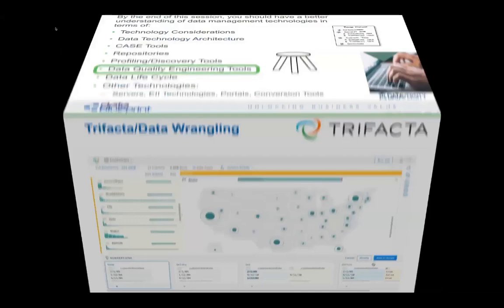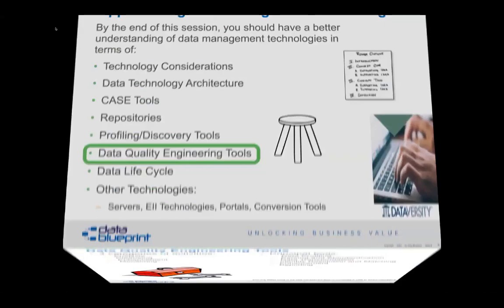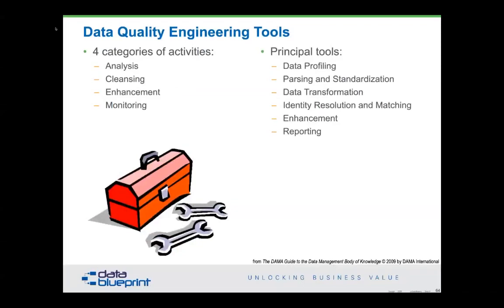Let's talk about four categories of data quality engineering tools. The categories are basically thinking about it, cleaning it, making it better, and simply checking on it. They divide up into not-so-easy categories: we go back to profiling — while you're looking at the 11% of data that has an asterisk as the lowest value in a column, you can also create a query that goes back and makes sure all the rest of your legacy data is similarly clean. You've got parsing and standardization, transformation, identity resolution and mapping, enhancement, and reporting.